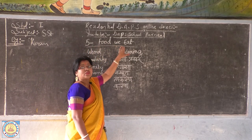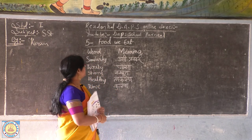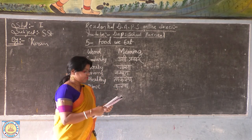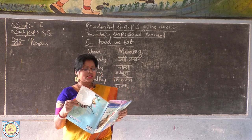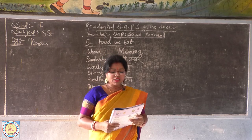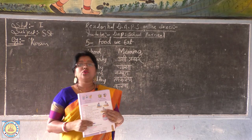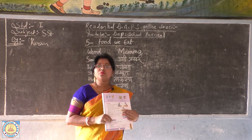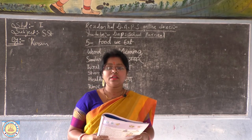Food means kya — atah bhojan. Bhojan jho hum khate hain, jho hum bhojan lete hain. The things which we eat are called food. Jho cheese hum log khate hain, jho khake hum jivit rate hain, usse food kaate hain.